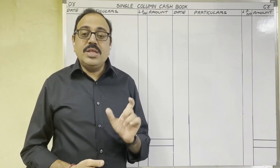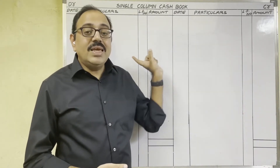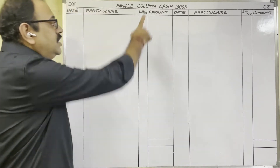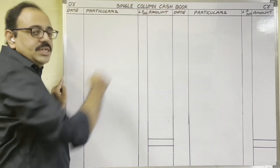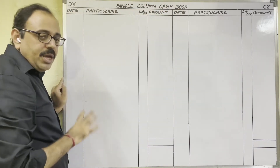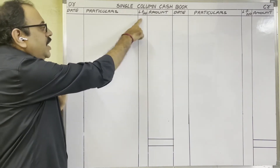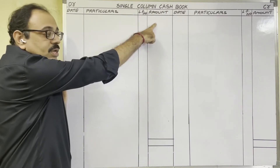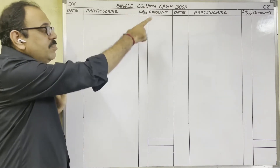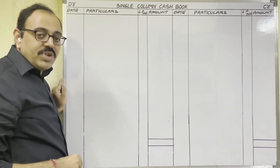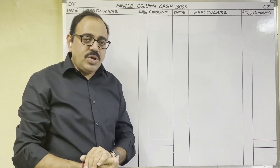The question is available in the description box. This is the format of a single column cash book. It is divided into two sides: debit side and credit side. Debit side columns are date, particulars, ledger folio number, and amount. Credit side columns are also the same. To prepare a single column cash book there are two methods.